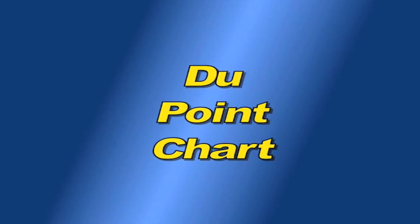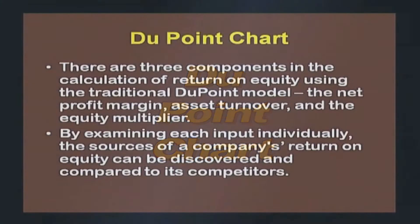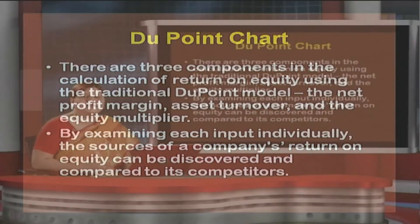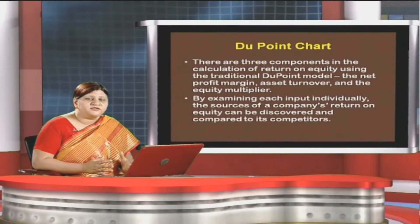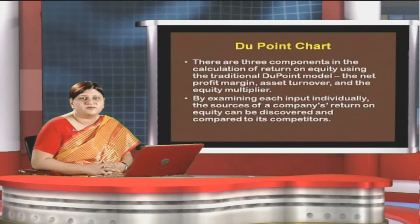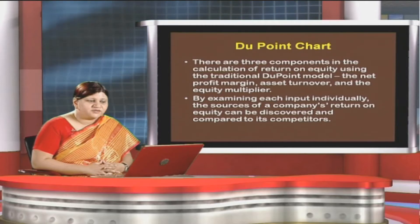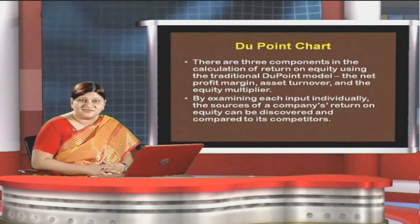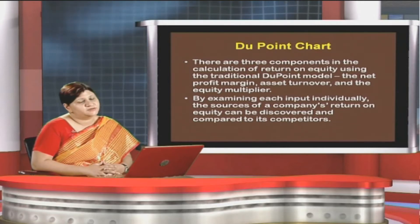First of all, let us learn about the DuPont chart. There are three components in the calculation of return on equity using the traditional DuPont model: the net profit margin, asset turnover, and the equity multiplier. By examining each input individually, the source of a company's return on equity can be discovered and compared to its competitors. Under the traditional DuPont analysis, return on equity is computed where these three basic premises are used: net profit margin, asset turnover, and the equity multiplier.